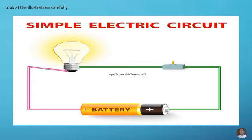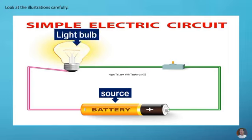Simple electric circuits. The picture above shows an electrical circuit, which has four parts: a source, light bulb, wires, and switch.